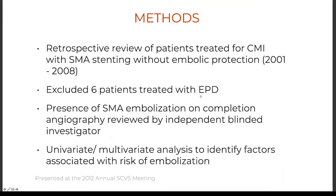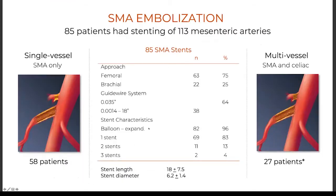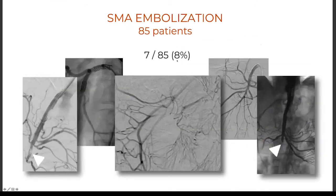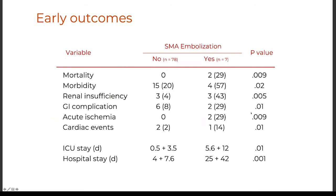In 85 patients treated with SMA stents without a filter, we found seven who had embolization. We treated five with catheter aspiration, two with no treatment. We did not find a statistical difference in mortality, but there were two deaths among the seven with embolization and none among those without. We also found higher morbidity, more ischemia, and longer length of stay. By univariate analysis, occlusion, length of lesion, severe calcification, and subsequently subacute or acute symptoms were factors associated with embolization.